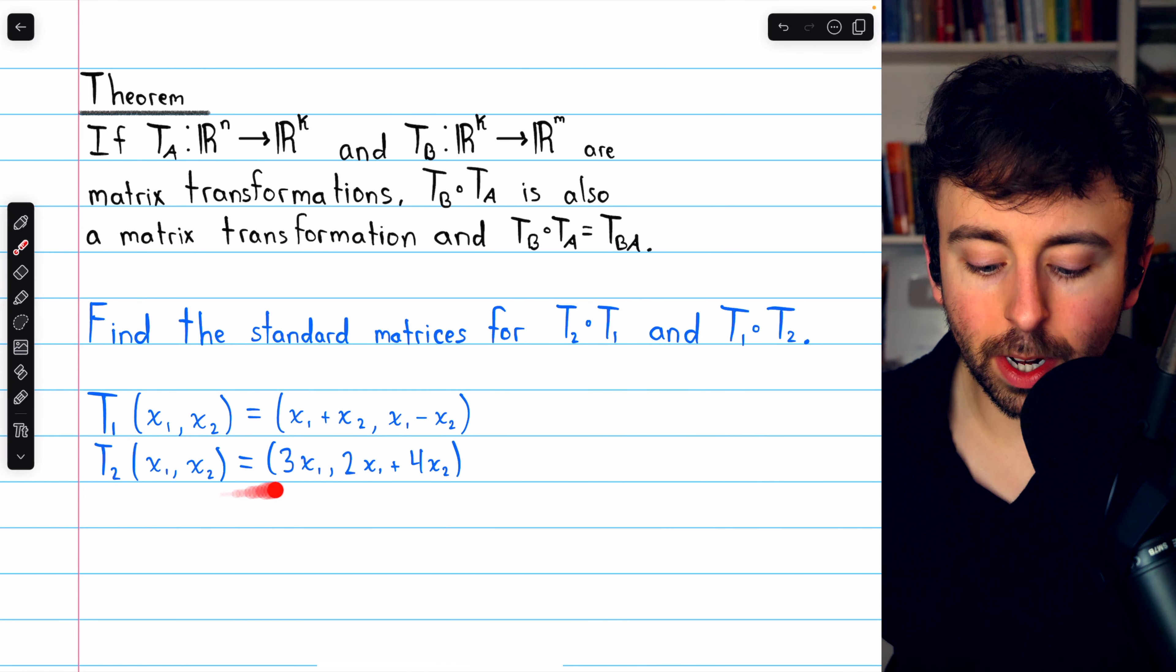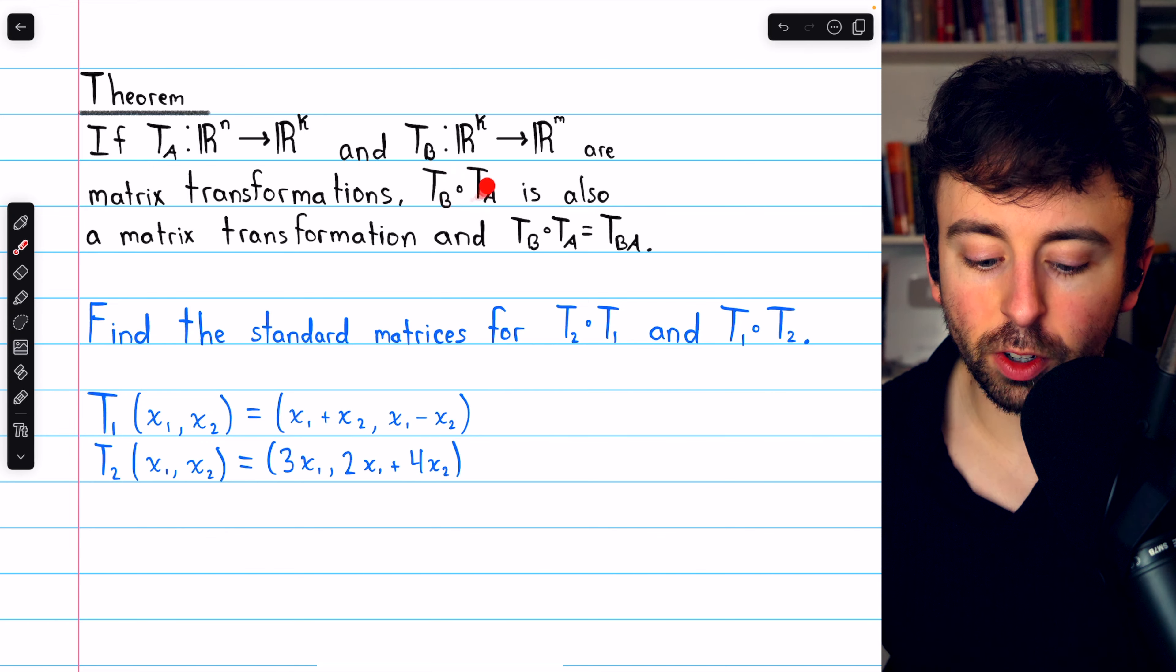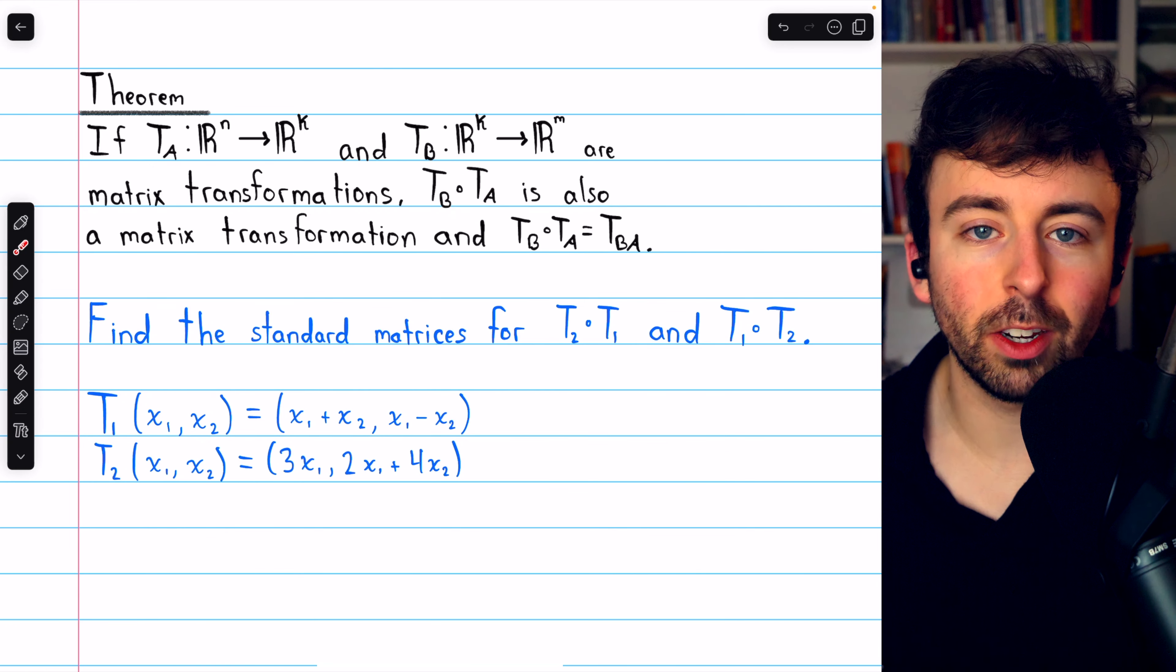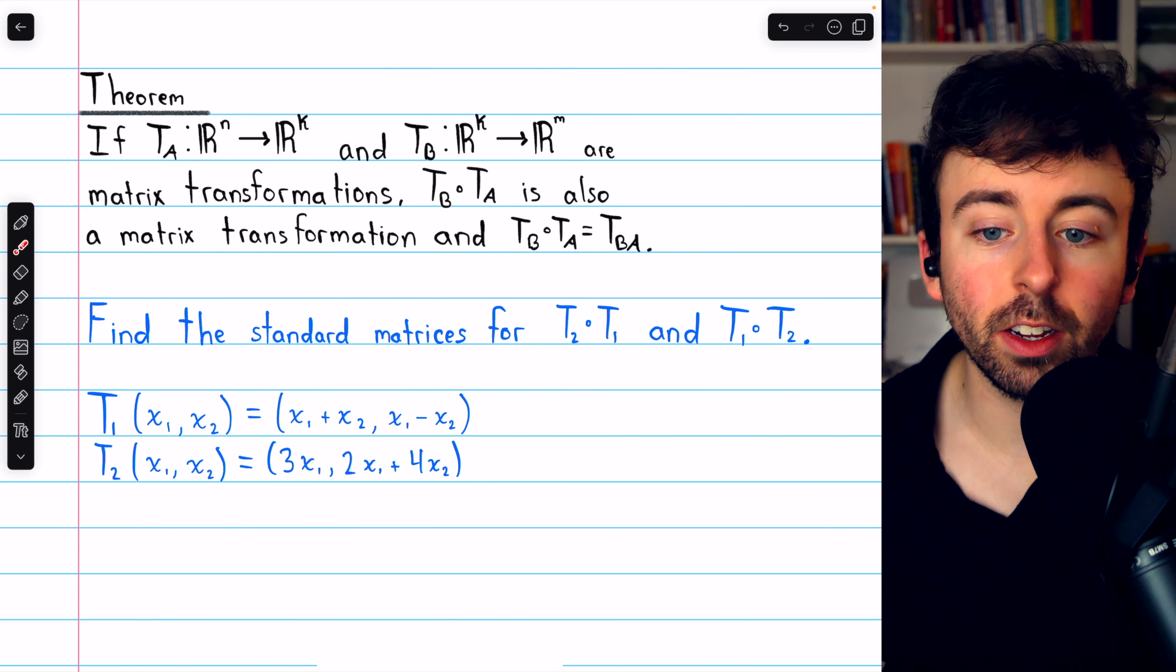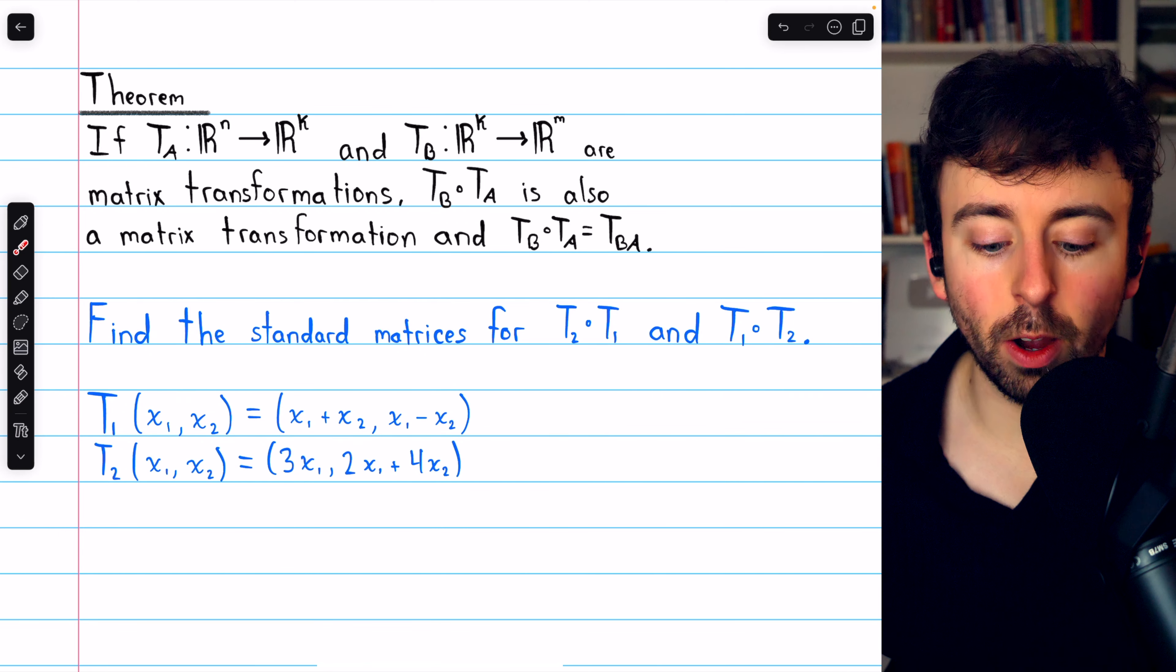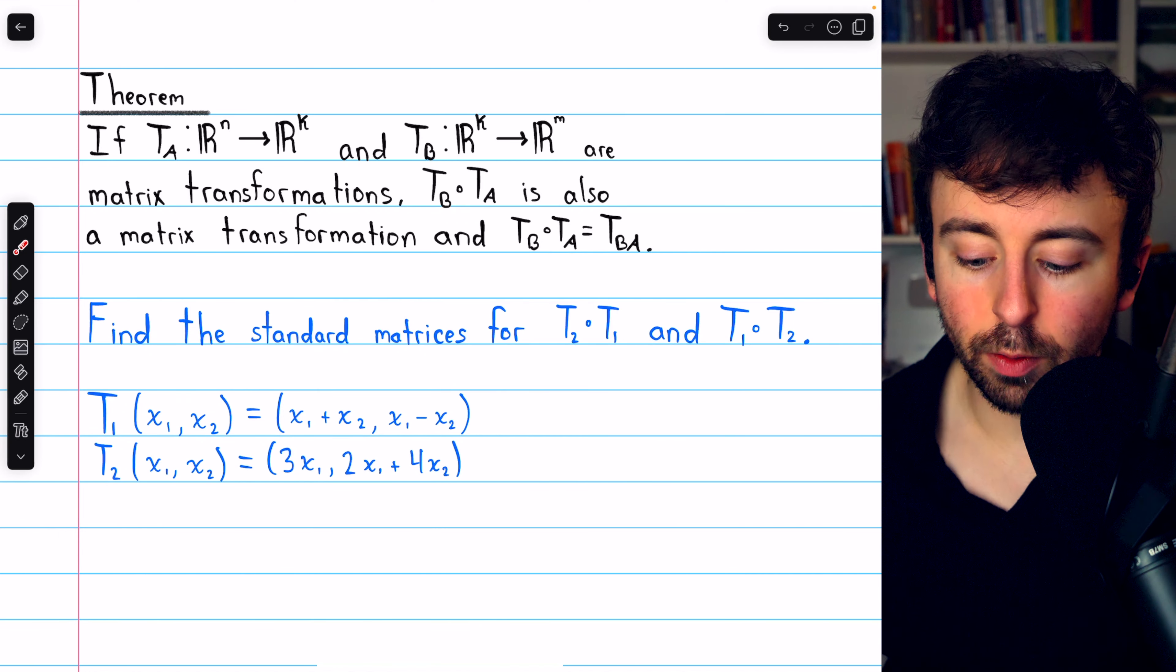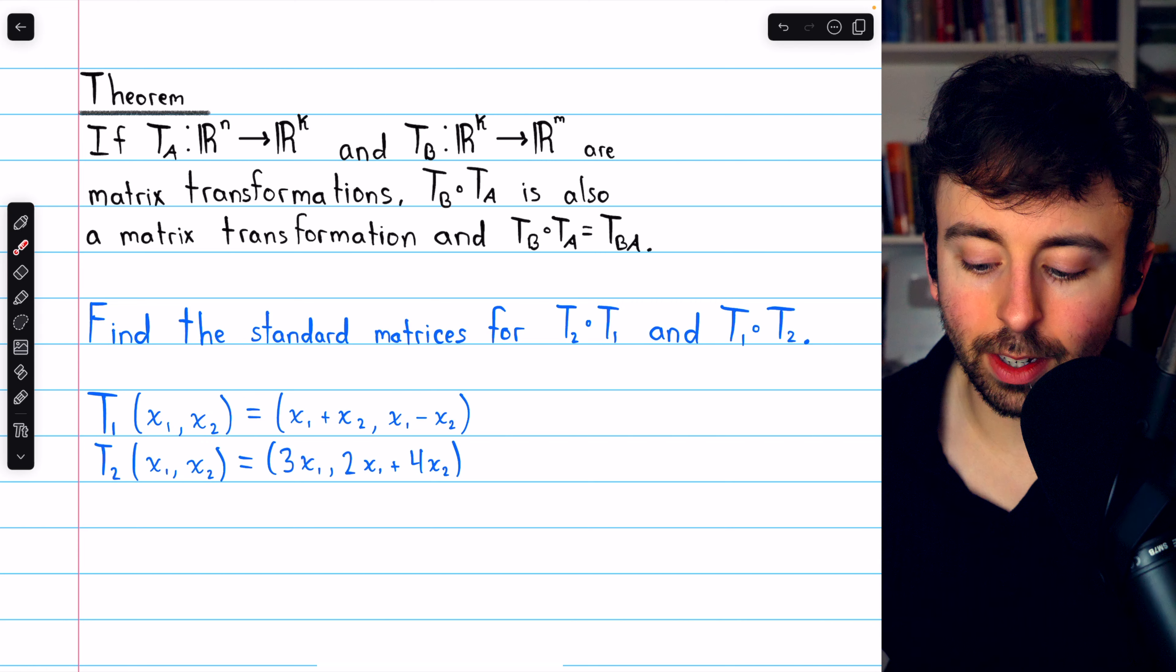We will of course use this theorem, which we've previously proven, link in the description, that if TA and TB are matrix transformations, then their composition is also a matrix transformation, and the standard matrix for that composition is just the product of the standard matrices of the individual transformations.